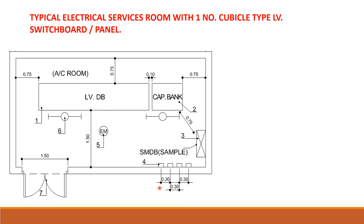Now we will see the arrangement of LV panels. If you look at this picture, this is one type of arrangement. Consider you have one LV panel and this is your door. As per the regulation, when the LV panel is in front of the door, we require 1.5 meters distance. On the rear side and sides, it should be 0.75 meters.